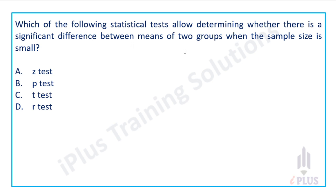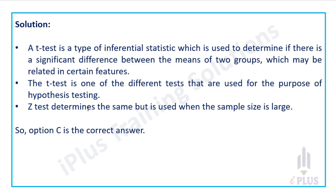Which of the following statistical tests determines whether there is a significant difference between the means of two groups when the sample size is small? A T-test is a type of inferential statistic used to determine if there is a significant difference between the means of two groups which may be related in a certain feature.